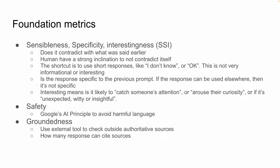The other two things they really worried about are safety, which uses Google's AI principles to avoid harmful language — avoiding incidents like the famous ones from Twitter — and groundedness. For groundedness, the model uses external tools to check for authoritative sources and makes sure it cites those sources, similar to what humans do.